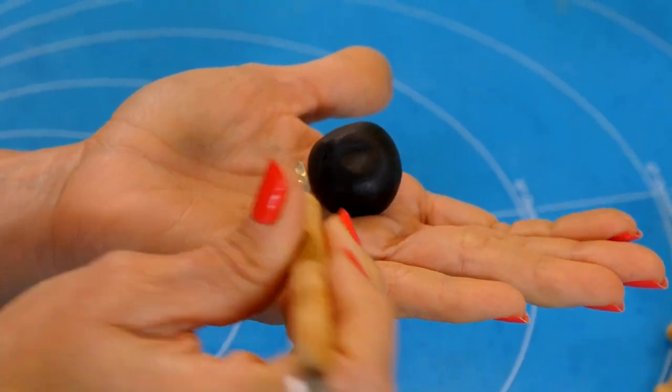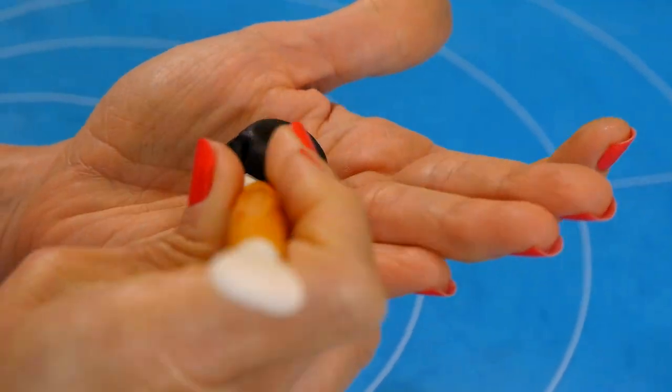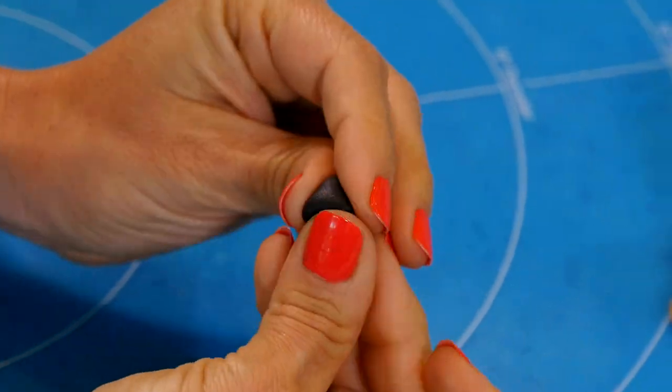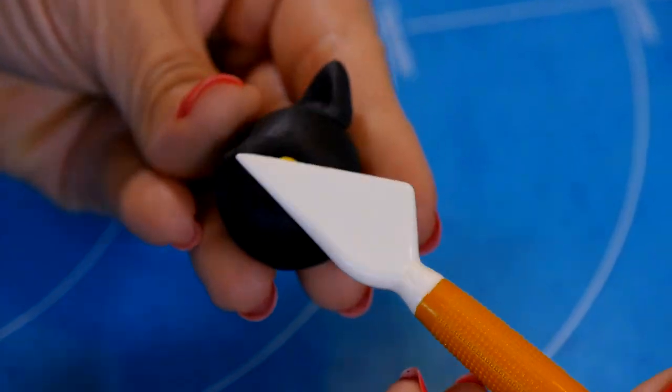Okay, so this puppy is so cute that I figured he needs some friends. So I did pretty much the same exact thing and I made a cat with some yellow almond eyes.